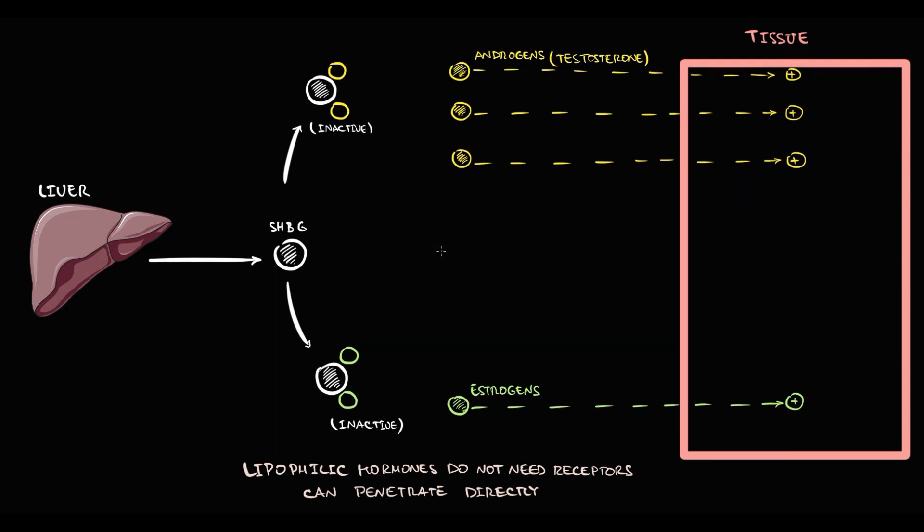The most common pathology that affects the level of sex hormone binding globulin is cirrhosis. In cirrhosis, the quantity of hepatocytes decrease. And without hepatocytes, we cannot produce sex hormone binding globulin. So the level of this protein decreases.